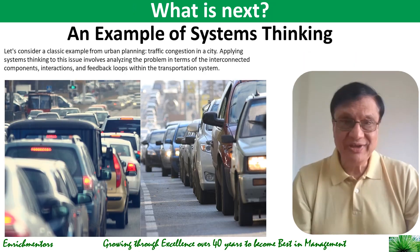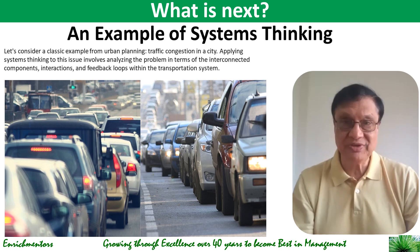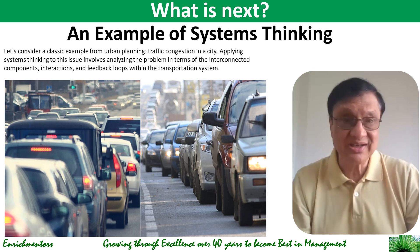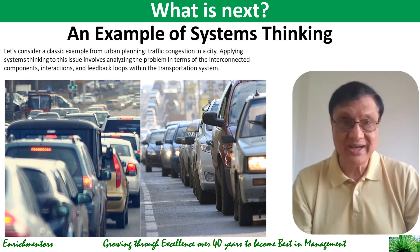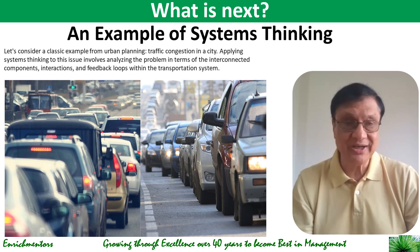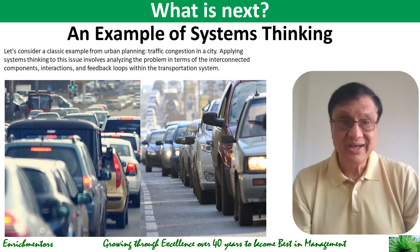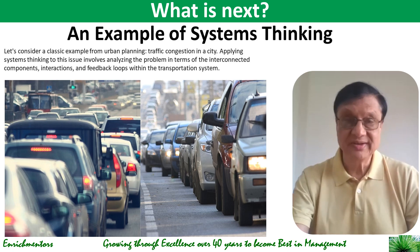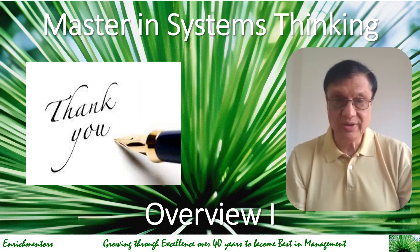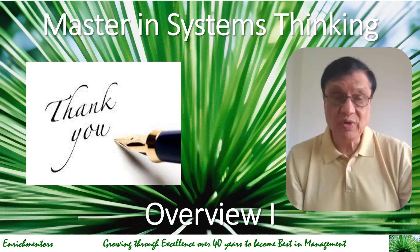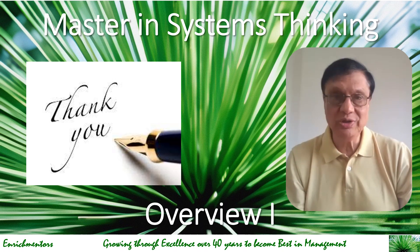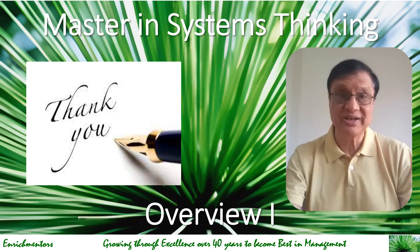Having looked at the facets and aspects of systems thinking, let's consider a classic example from urban planning: traffic congestion in a city. Applying systems thinking to this issue involves analyzing the problem in terms of interconnected components, interactions, feedback loops, and the environment within the transportation system. Thank you for watching this first lecture. I hope you are beginning to learn new things and enjoy the course. Please feel free to message me with any questions, and download the PDF file to look at the examples shown.